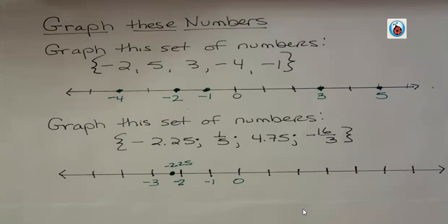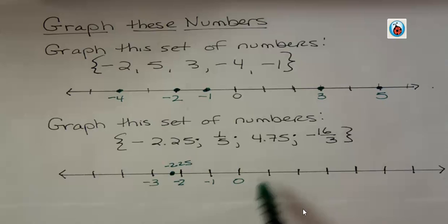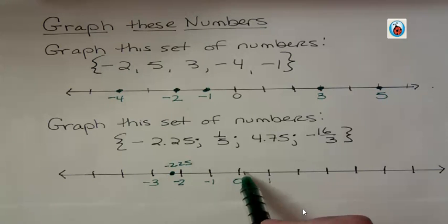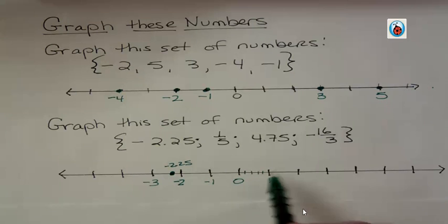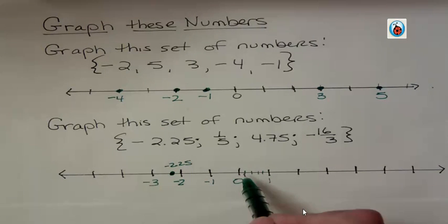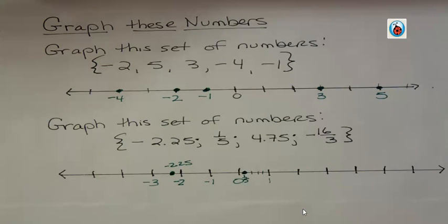What about this one — one-fifth? Think about the distance between zero and one, and if you could divide that up into five parts, then one-fifth is one of those five parts away. So one-fifth is right there, close to zero.